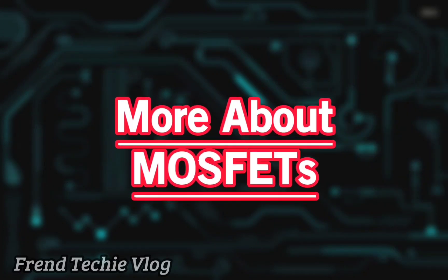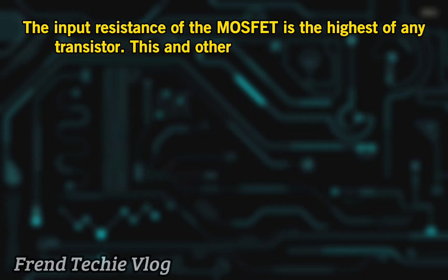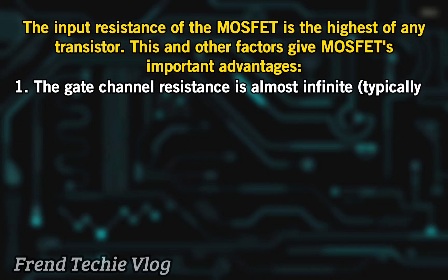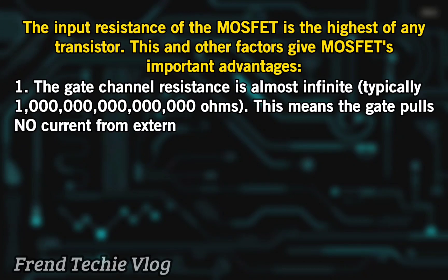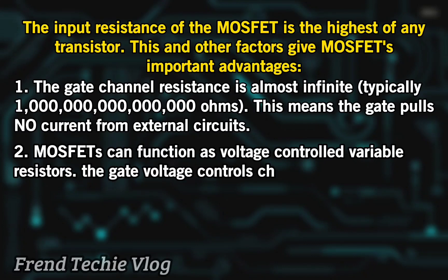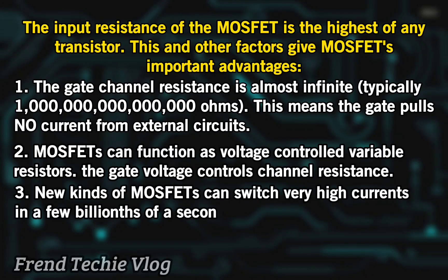The input resistance of the MOSFET is the highest of any transistor. The gate channel resistance is almost infinite — typically 1 quadrillion ohms — meaning the gate pulls no current from external circuits; it may only borrow a few trillionths of an ampere. MOSFETs can also function as voltage-controlled variable resistors, where gate voltage controls channel resistance. New kinds of MOSFETs can switch very high currents in a few billionths of a second.